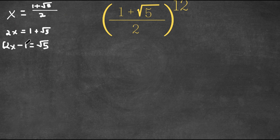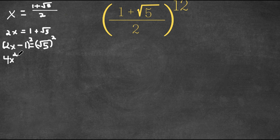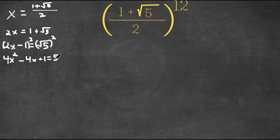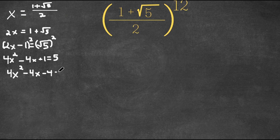And now if I square both sides, two x minus one squared — that's four x squared minus four x plus one. And this is equal to the square root of five squared, which is simply five. Now if I want to bring the five to the other side, I subtract by five on both sides, meaning I get four x squared minus four x minus four equals zero.